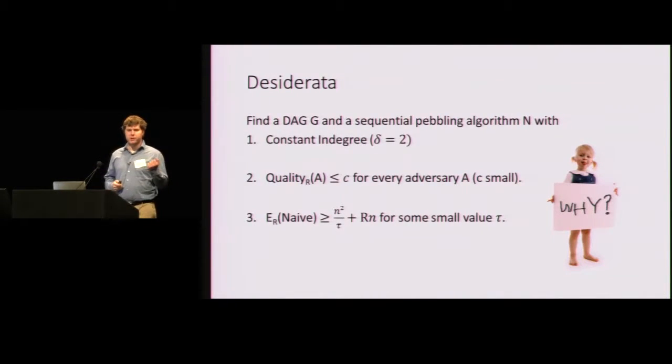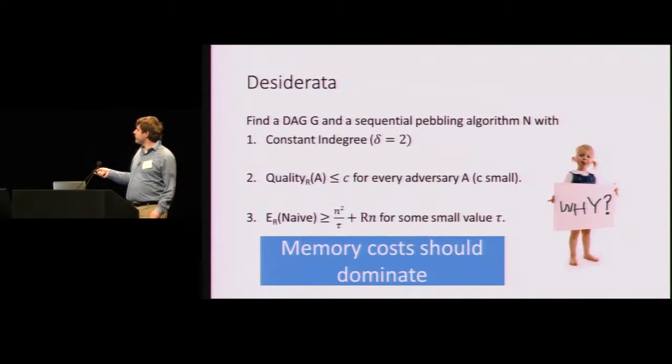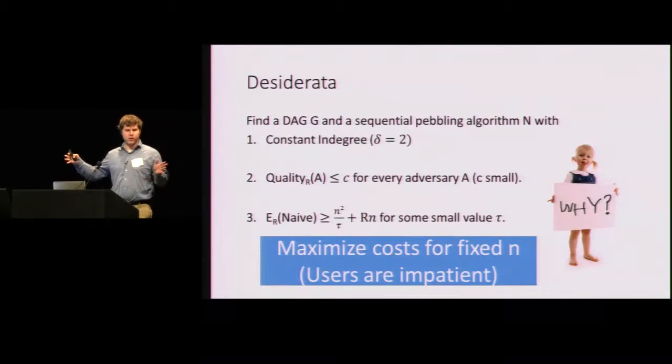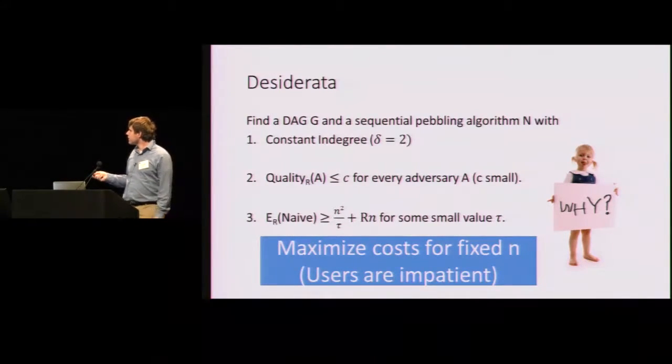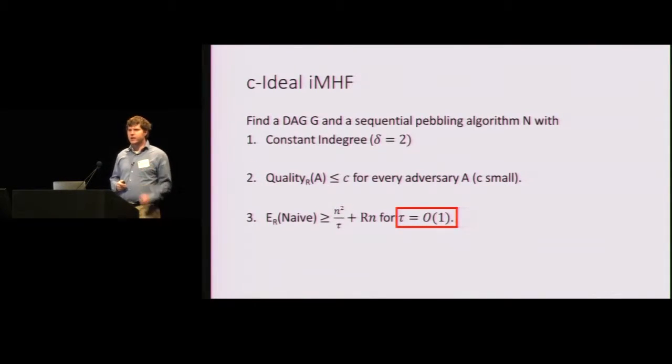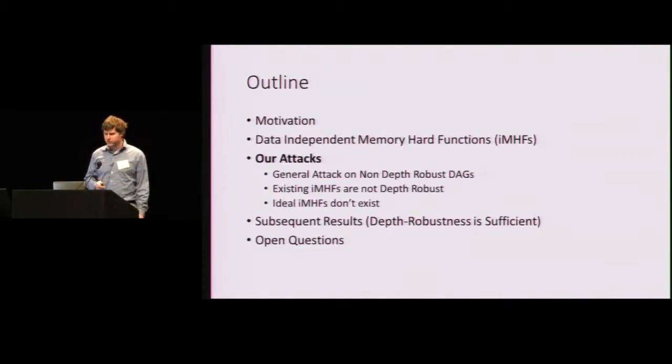All right. So what properties do we desire for an IMHF? Well, for practical reasons, we want a graph with constant in-degree. We also want to assure that any attack A has small quality, less than or equal to C for some hopefully small constant C. And we also want to ensure that the naive algorithm is somewhat expensive. Why do we want this third constraint? Well, it tells us that memory costs should dominate. And also remember that users are impatient. So n, the running time of the algorithm, is fixed. So we want to make this function as expensive as possible, given a bounded running time. We'll say that a MHF is C ideal if it satisfies all three of these constraints for some constant tau.